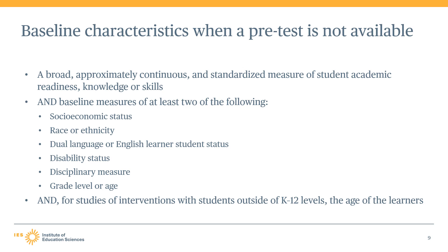One important caveat: if the outcome of interest is a broad measure of knowledge or skills, such as standardized academic achievement measures, then using a broad baseline measure of knowledge or skills is sufficient for satisfying the baseline equivalence standard, and authors would not need to satisfy the standard for additional student or contextual characteristics.